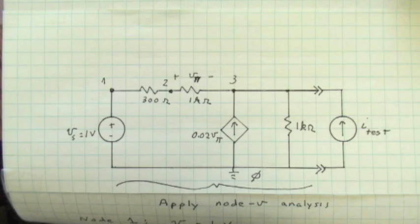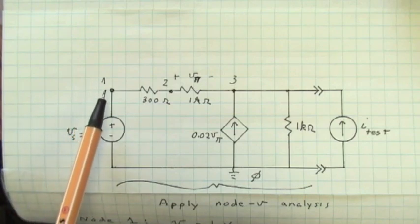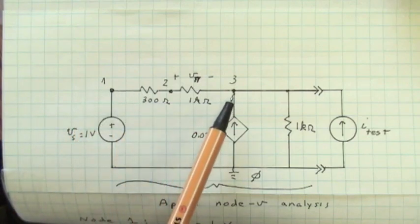And this time, instead of using SPICE, let's actually go through a node voltage analysis solution. We have the three nodes in addition to the reference node. Node 1, node 2, node 3.